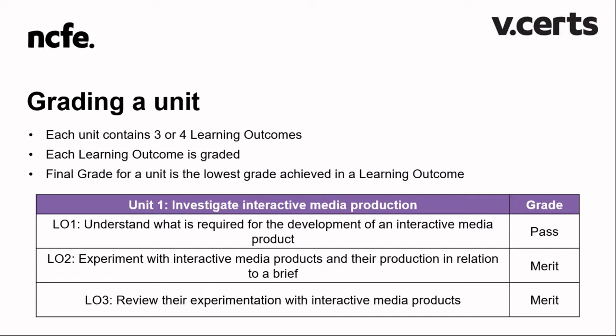Each unit in Interactive Media consists of three or four learning outcomes, and each learning outcome is graded. To get a pass in a unit, the learner needs to achieve a minimum of a pass for each learning outcome. For example, if a learner got a pass in learning outcome one and merits in the other two, the final grade for the unit is a pass - the lowest grade in any learning outcome is their overall grade for that unit, so there is no compensatory system within a unit. However, when working out the final overall qualification grade combining all four units, there is compensatory grading.